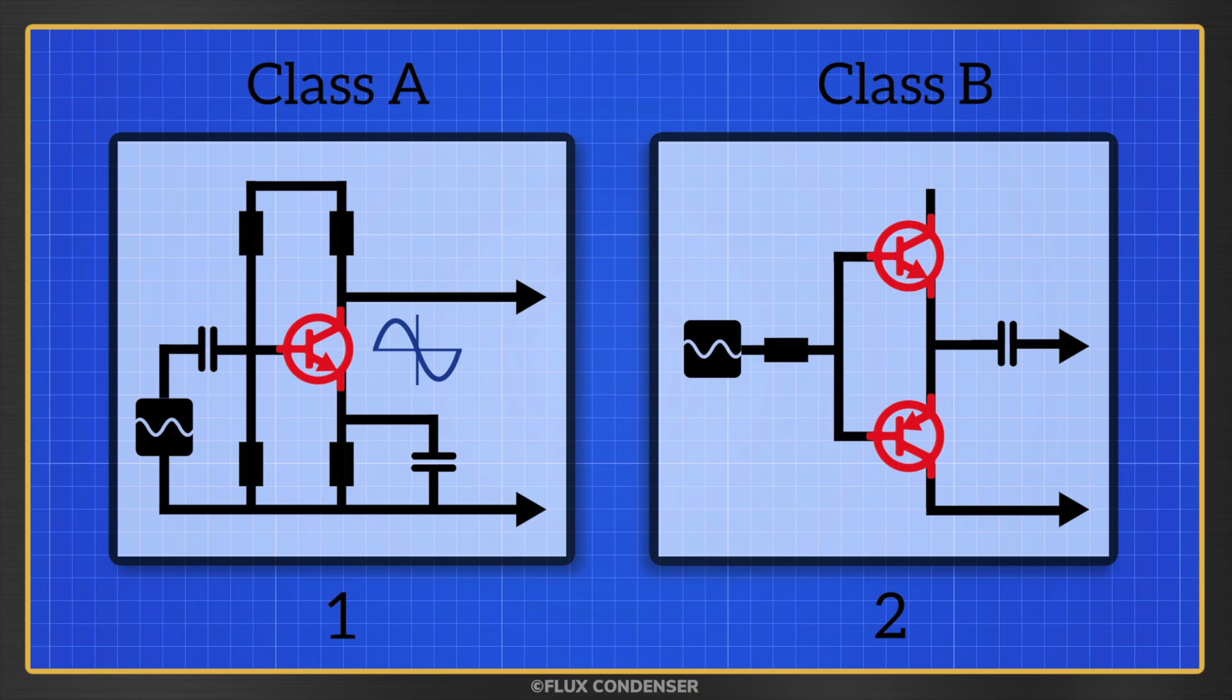A class B amp, however, splits duties between two output transistors. One handles the positive and the other the negative. As we learned earlier, NPNs turn on when there's a positive current, so naturally it's used for the positive portion of the audio signal. The PNP turns on with a negative current, so as expected, it handles the negative portion of the signal.